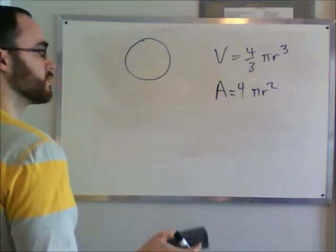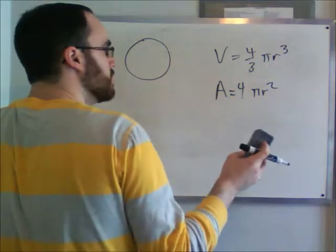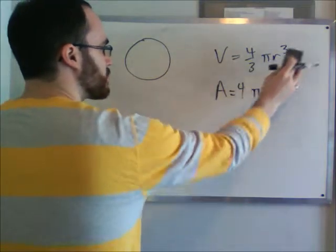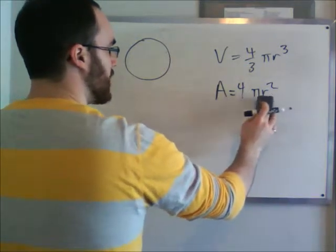That's basically all you need to know for a sphere. We'll talk more about spheres in the future. So our volume is four-thirds pi r cubed, and our area is four pi r squared.